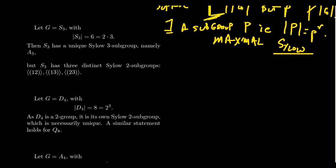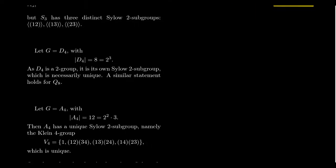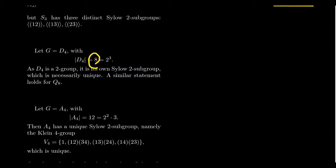For D4, the dihedral group, its order is 8, which is 2 cubed. D4 is itself a 2-group because its order is a power of 2, and therefore it is a maximal 2-group — it's the largest subgroup possible. So if your group is itself a P-group, then it's its own Sylow P-subgroup, which is of course unique in that situation. The same is true of Q8, the quaternion group of order 8 — since it's a 2-group, it's its own Sylow 2-subgroup.